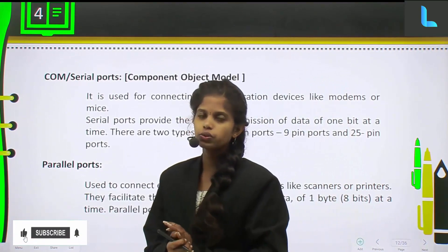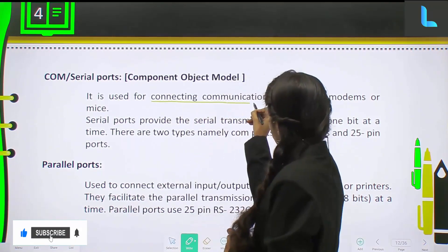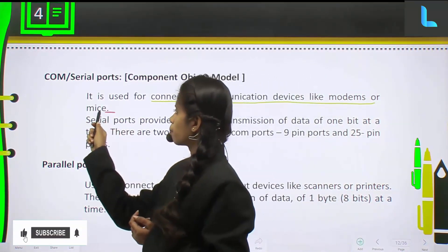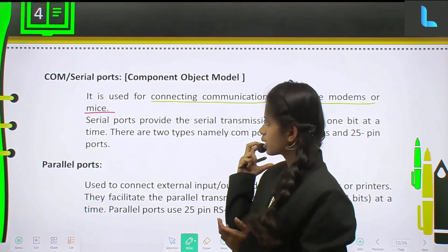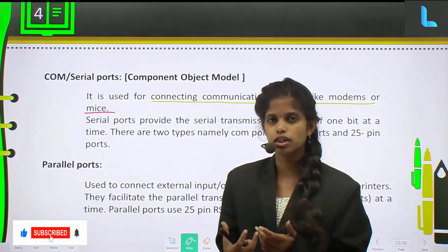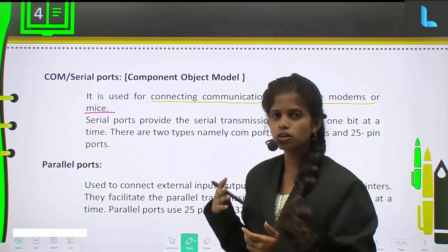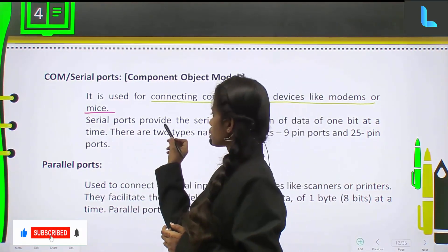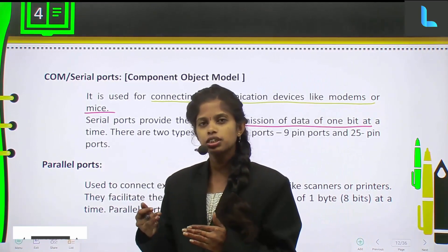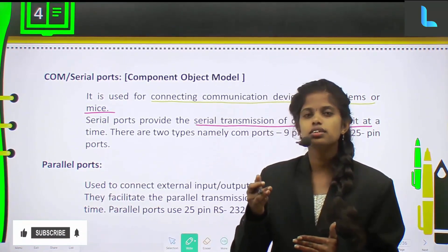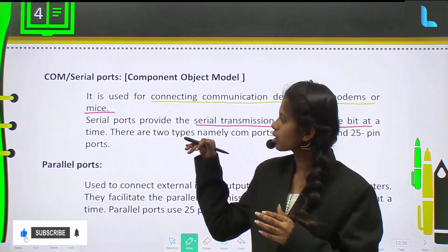The first one is COM port, also called a serial port. It is used for connecting communication devices like modems or microphones. If you want to connect a modem, which is used for network routing, or a mic to the computer system or to the motherboard, you will use the port called the serial port or COM port. Serial ports provide serial transmission of data — one byte at a time. Serial transmission means one after the other the data will be transmitted, not in parallel.